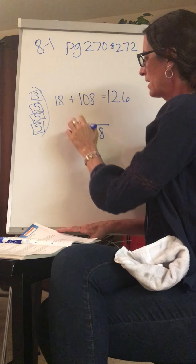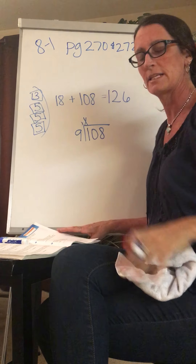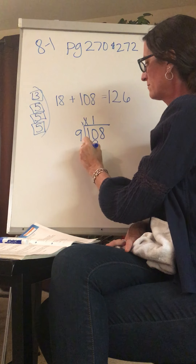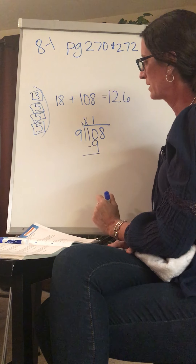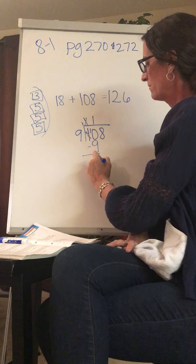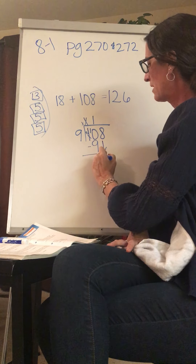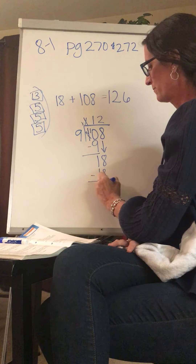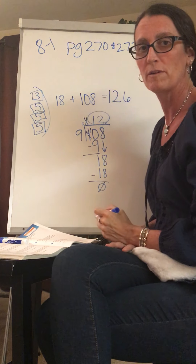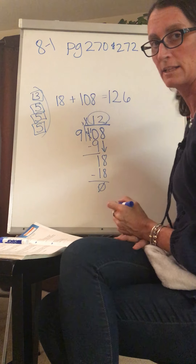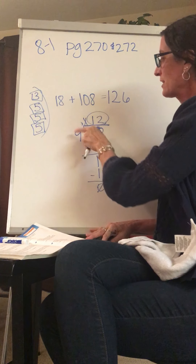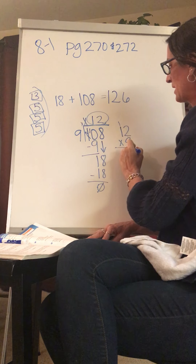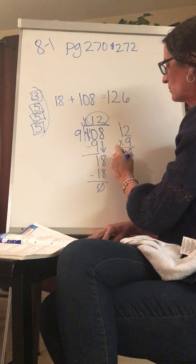I know I can't do nine times anything to get into that one hundreds. But nine times one is nine. When I subtract I have one left and my eight falls down. Nine times two is 18. So he found 12 pencils in each of those other nine classrooms. And I can check that work by doing 12 times nine. Nine times two is 18. Nine times one is nine, and one more is 10.